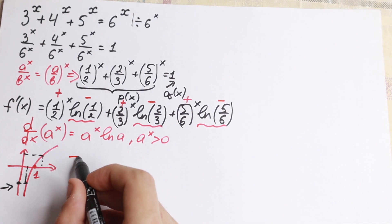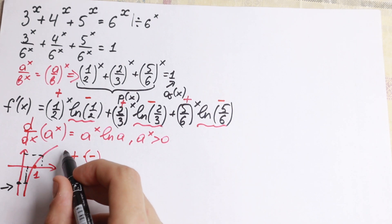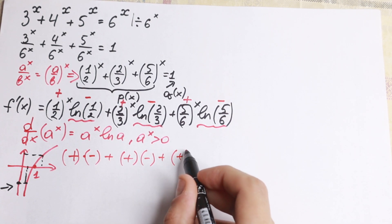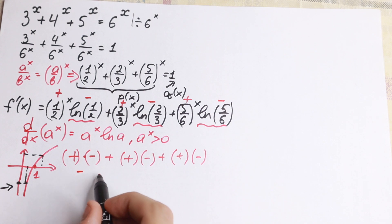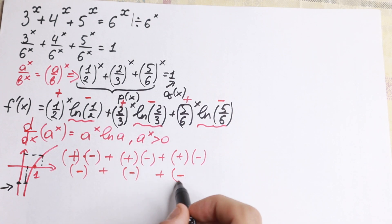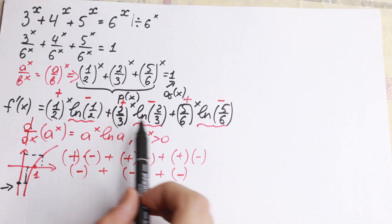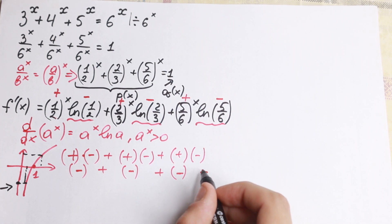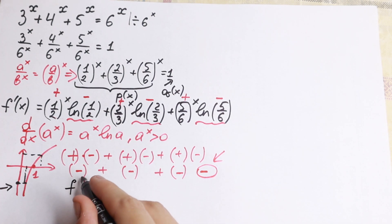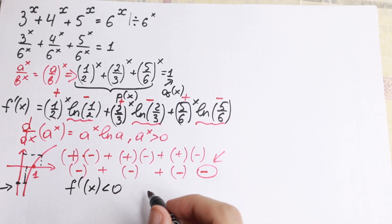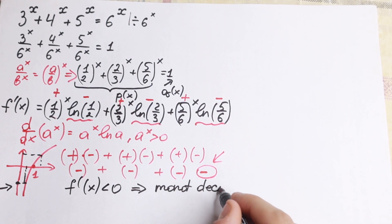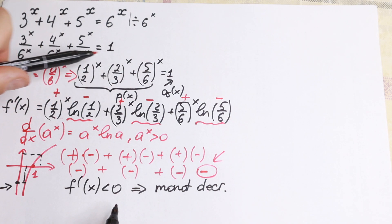So we have plus times minus from each expression: plus times minus, plus times minus, plus times minus. We are adding three negative expressions, so this is negative, this is negative, and this is negative. Therefore f prime of x is less than 0, meaning our function f(x) is a monotonic decreasing function.